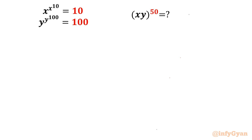Hello everyone, welcome to Infigyan. In this exciting and powerful video on System of Exponentials, we have two equations: x^(x^10) = 10 and y^(y^100) = 100. We have to find the expression (xy)^50.